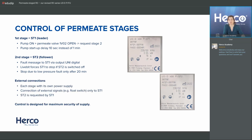For external connections: each stage has its own power supply. Connection of external signals — for example a float switch indicating the permeate tank is full — is done only to stage one, because stage one is the leader and gives the signals to stage two.